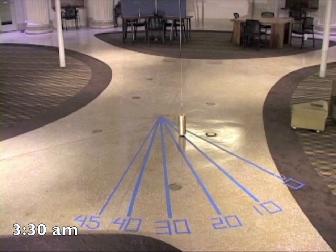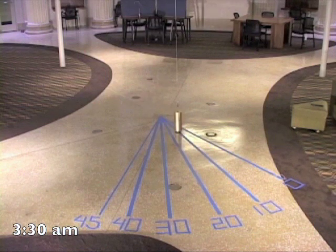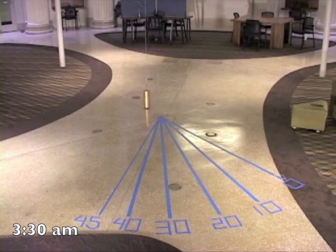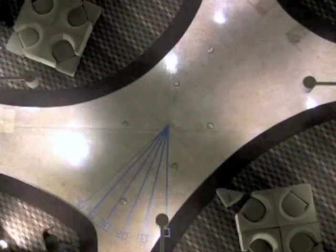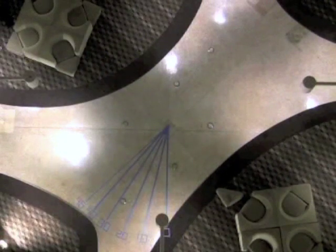In one hour, the pendulum has precessed about 10 degrees, but we can also see that its amplitude is smaller than before. This is due to damping. We used a heavy bob and a long wire to reduce the effects of damping, but you can never completely eliminate them.